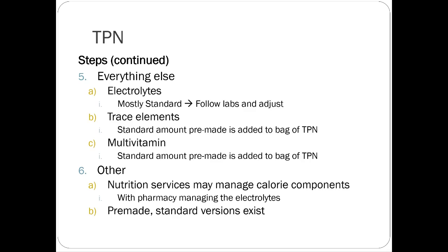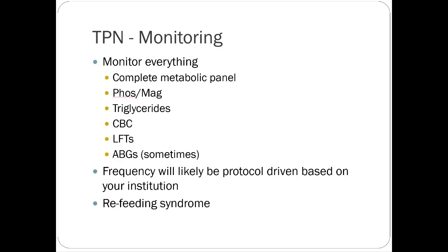TPN requires significant monitoring — metabolic panels, phosphorus, magnesium, triglycerides, CBCs, LFTs, sometimes ABGs — because TPN can stress the liver and kidneys over time. Refeeding syndrome is also a risk: in malnourished or near-starvation patients, reintroducing nutrition can cause dramatic electrolyte shifts, particularly phosphorus, which can affect the cardiac system.